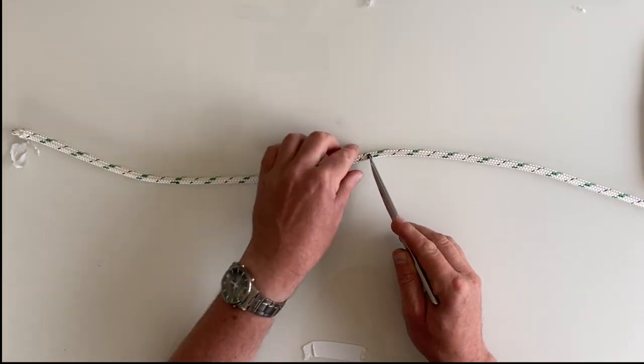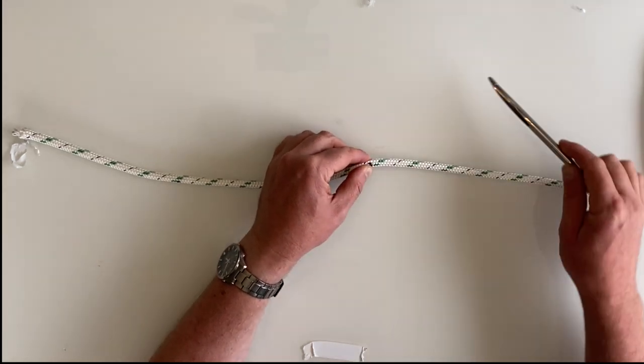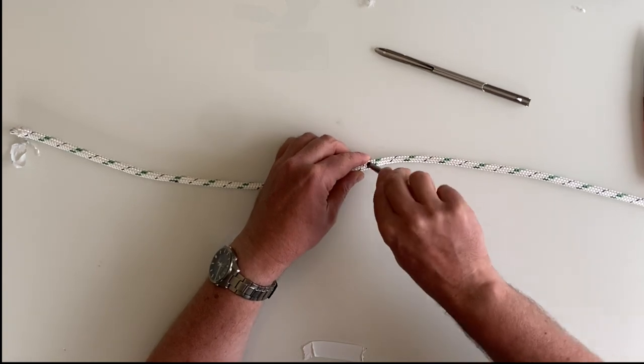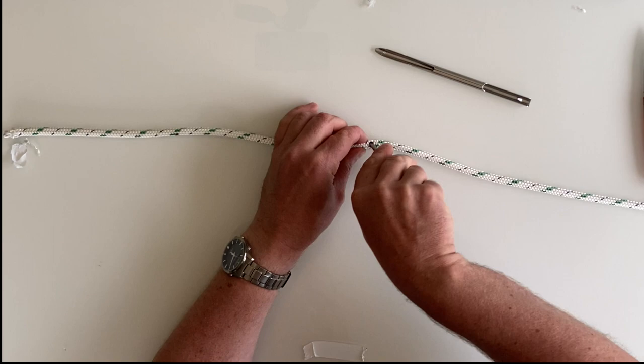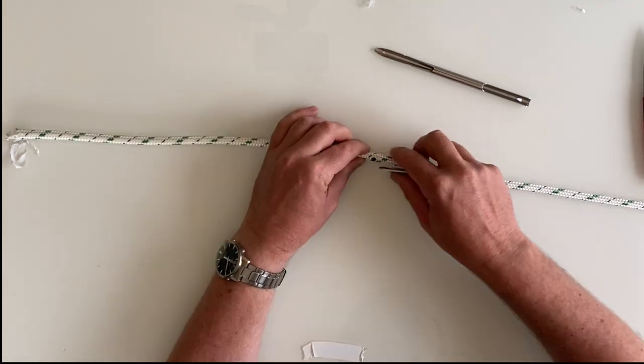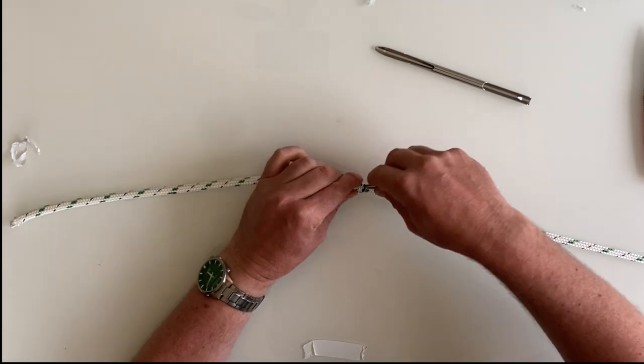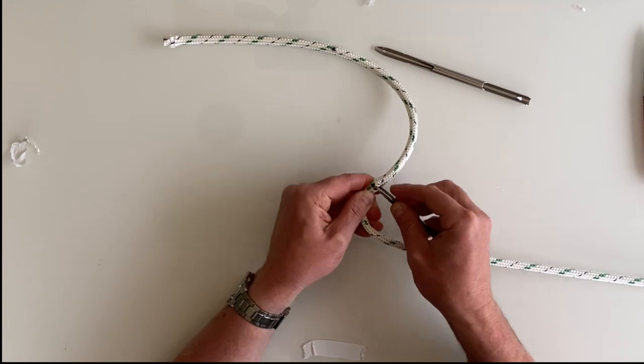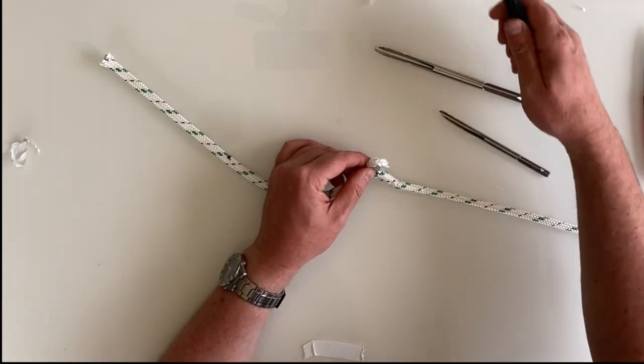I'm going to back into that second mark there on the standing part. I'm going to pull out the inner braid. It's a bit fiddly. I'm going to use this spike to get in and grip ahead of it. Now I've got it pulled out.